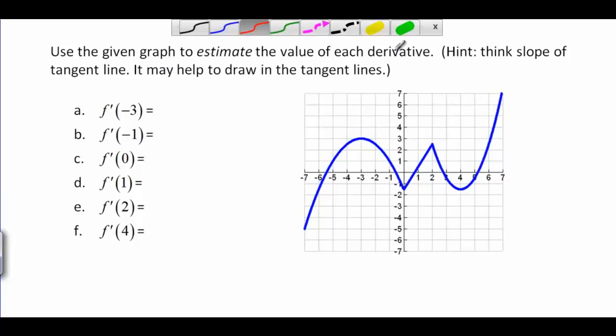So the first derivative it asks us to find, the first slope, is the slope of the tangent line at negative 3. So here's negative 3. I draw in a tangent line here. And if I draw it well, it looks like it should be nice and flat.